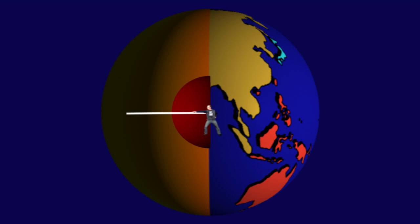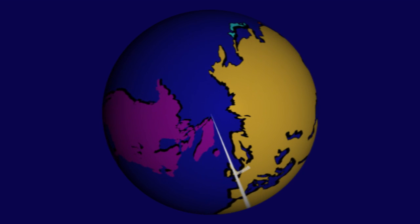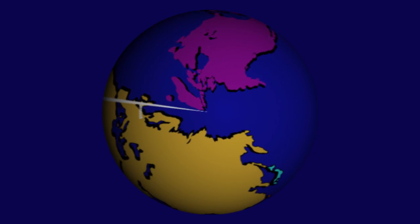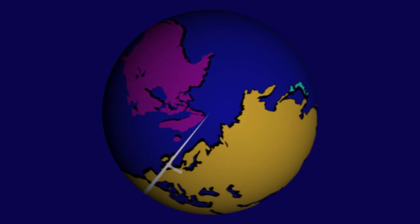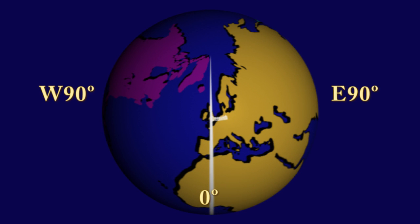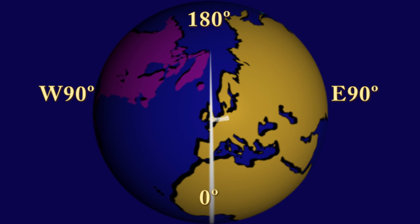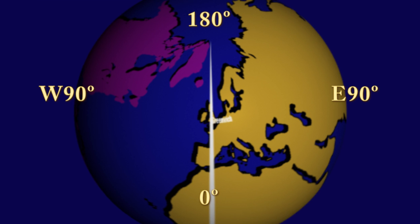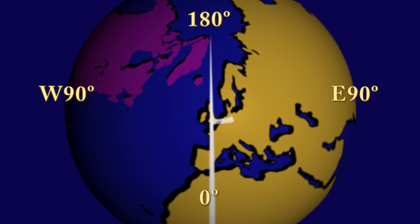Unlike latitude, measured as the angle north or south of the equator with a maximum value of 90 degrees, longitude is measured as the angle east or west of the Greenwich prime meridian, and increases to the opposite side of the globe at 180 degrees. So if you're wondering whether you're looking at a value of latitude or longitude, you're guaranteed that if the number is over 90, then it's longitude, not latitude.